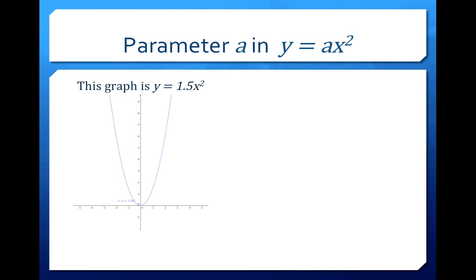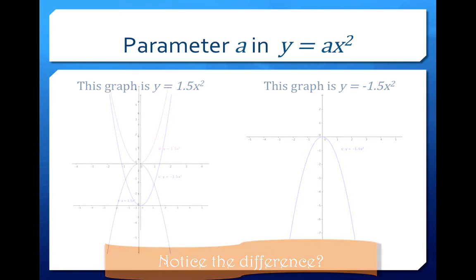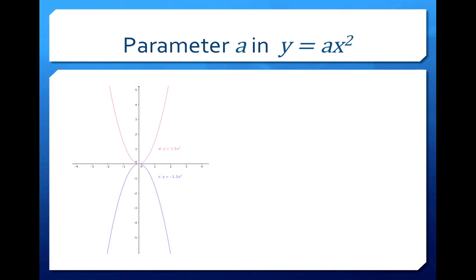Here is the same graph I gave you in the previous slide, so y equals 1.5x squared, where a is 1.5, opening is bigger because it's close to 0. Here is y equals negative 1.5x squared. I'm pretty sure that you can notice the difference between these two graphs.